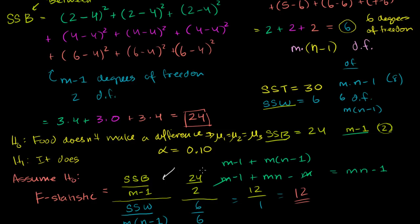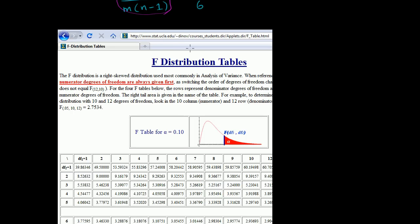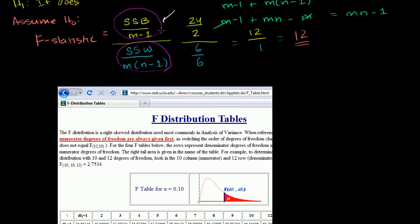Each of these sums of squares has a chi-square distribution. The between sum of squares has a chi-square distribution with two degrees of freedom, and the within sum of squares has roughly a chi-square distribution with six degrees of freedom. So the F distribution is the ratio of two chi-square distributions. I have a screenshot from a professor's course at UCLA — an F table. The F distribution looks different depending on the degrees of freedom of the numerator and denominator, giving two degrees of freedom to consider.